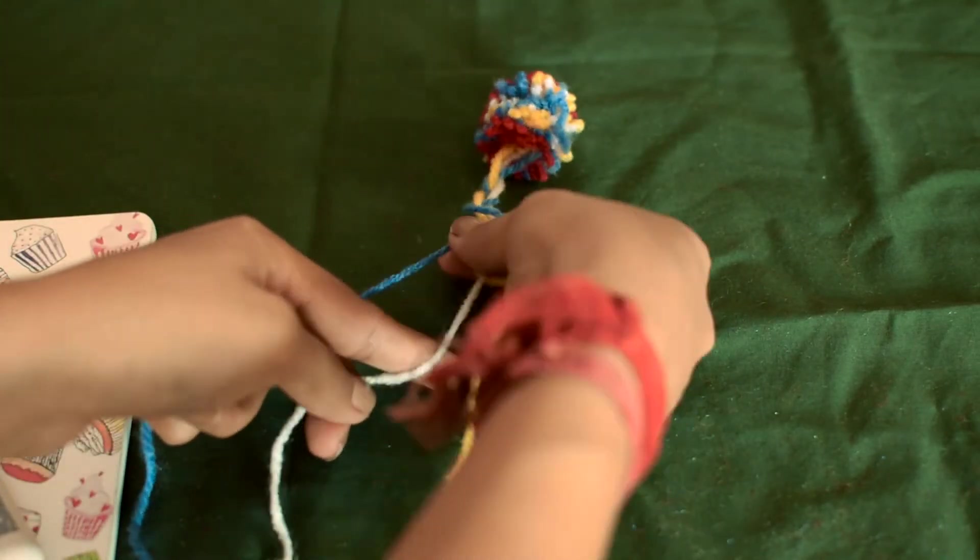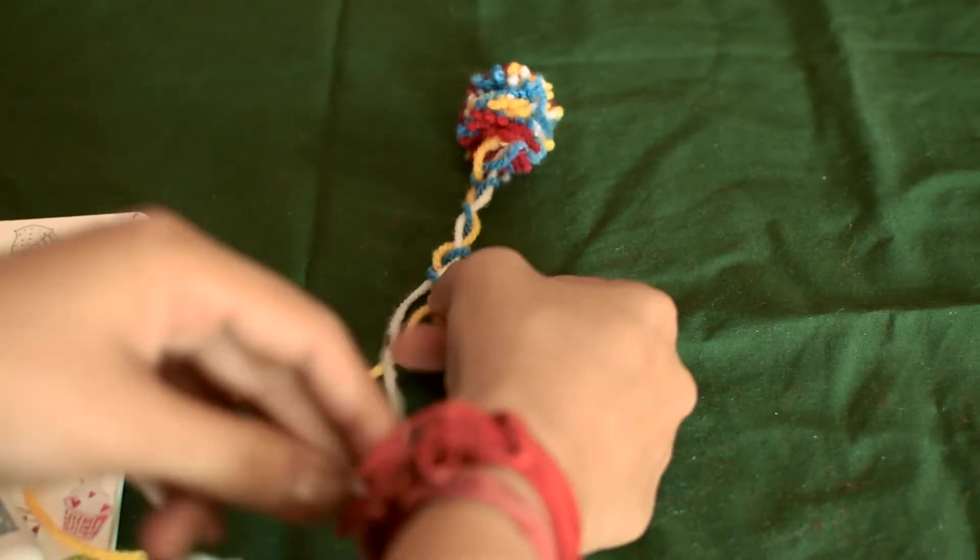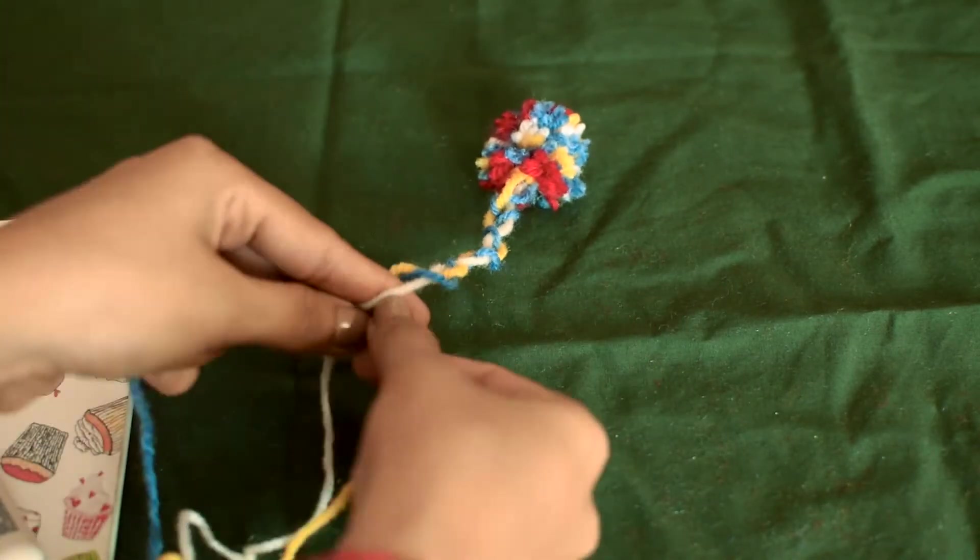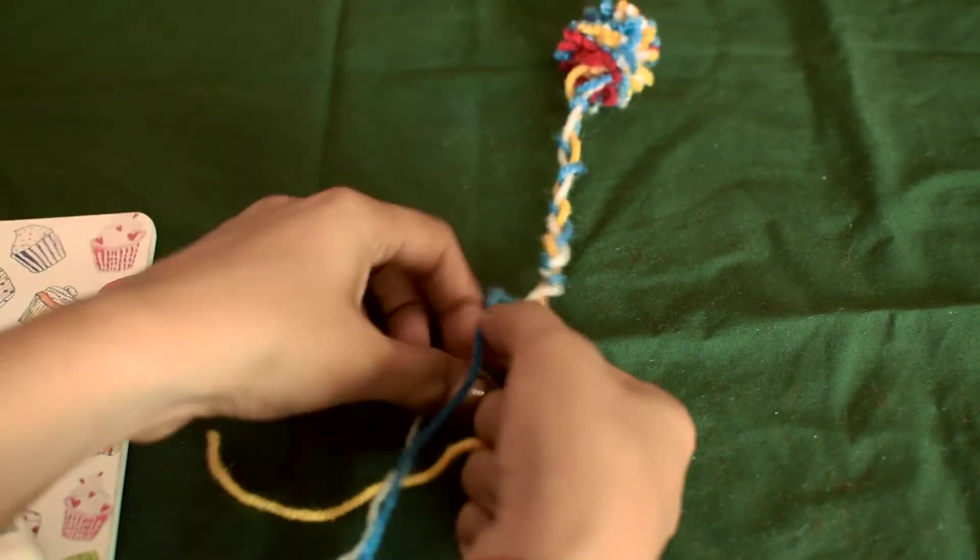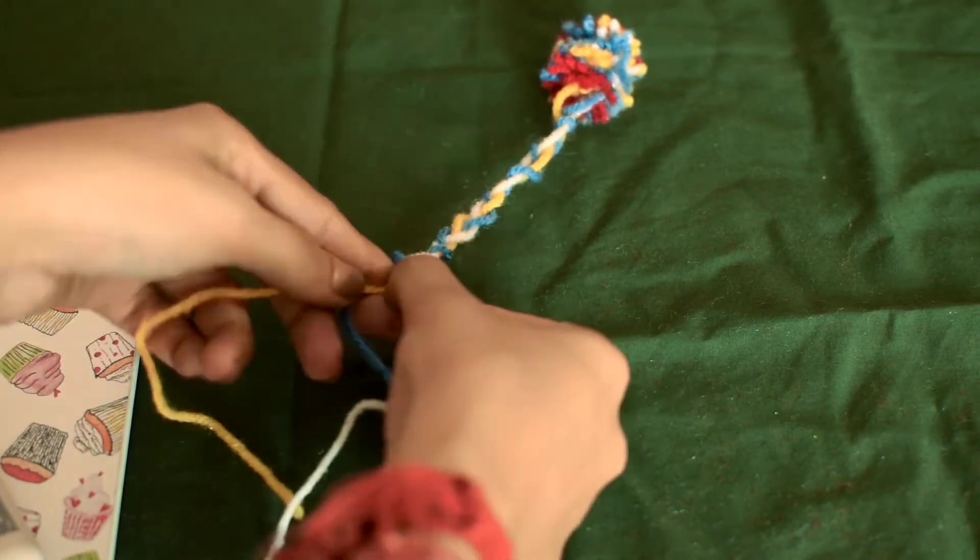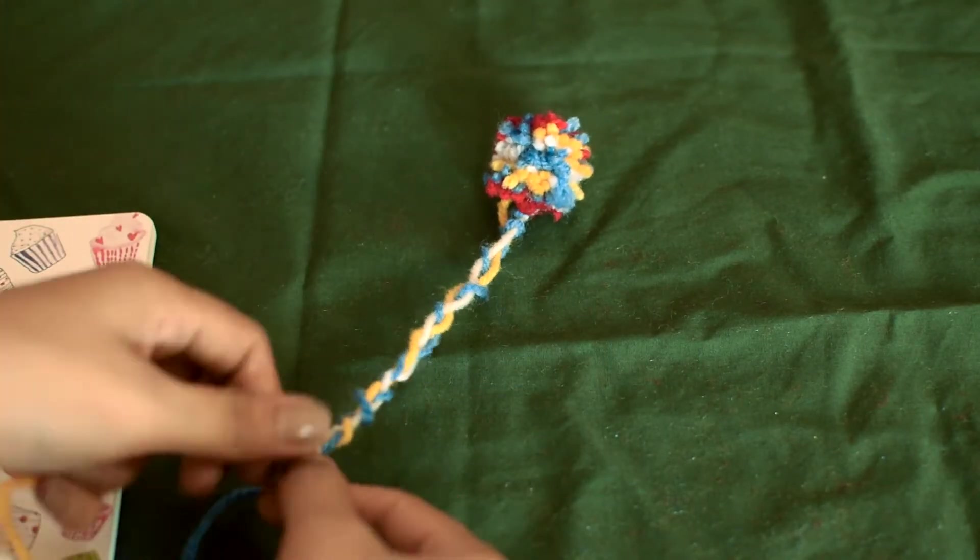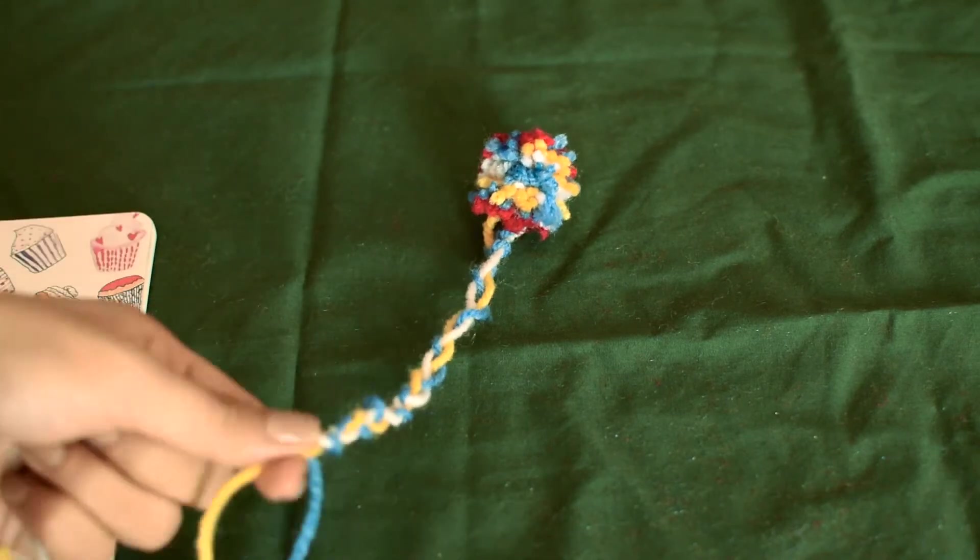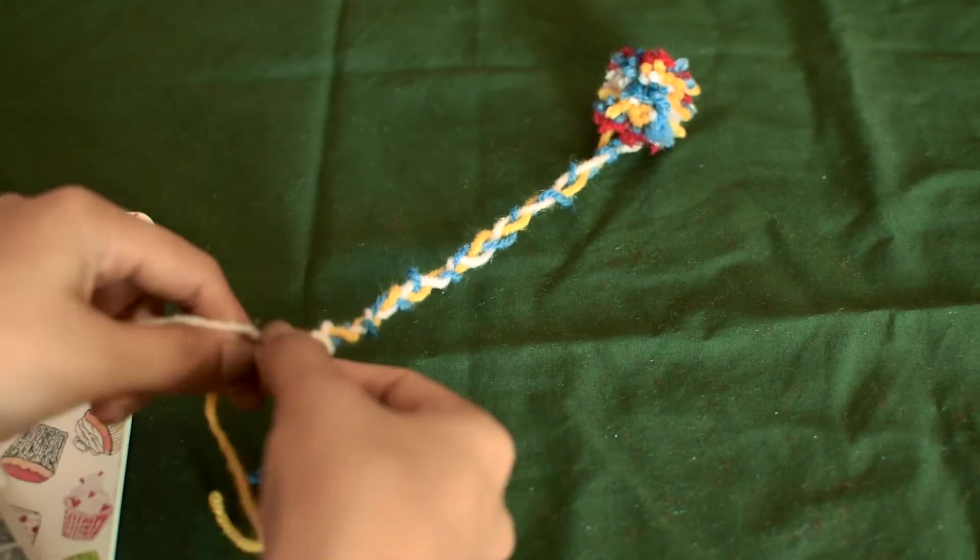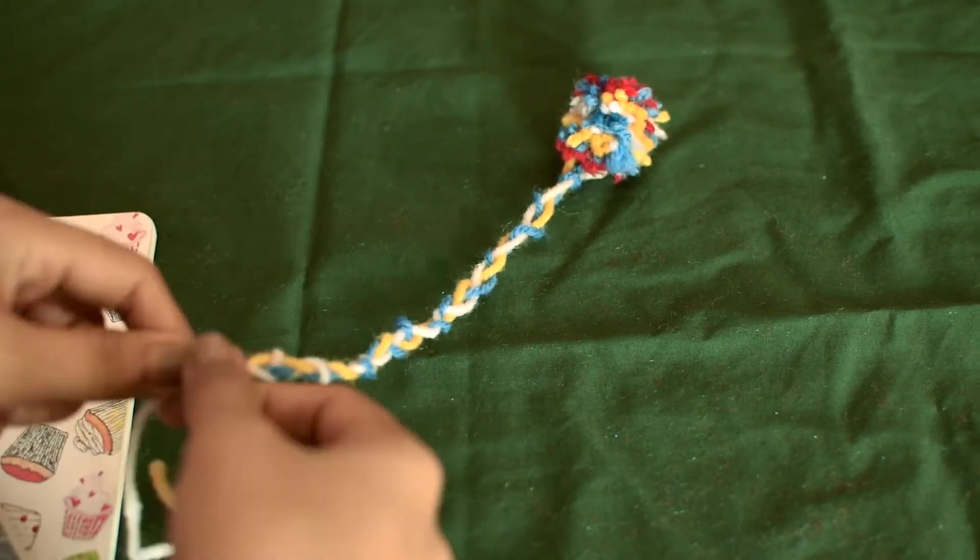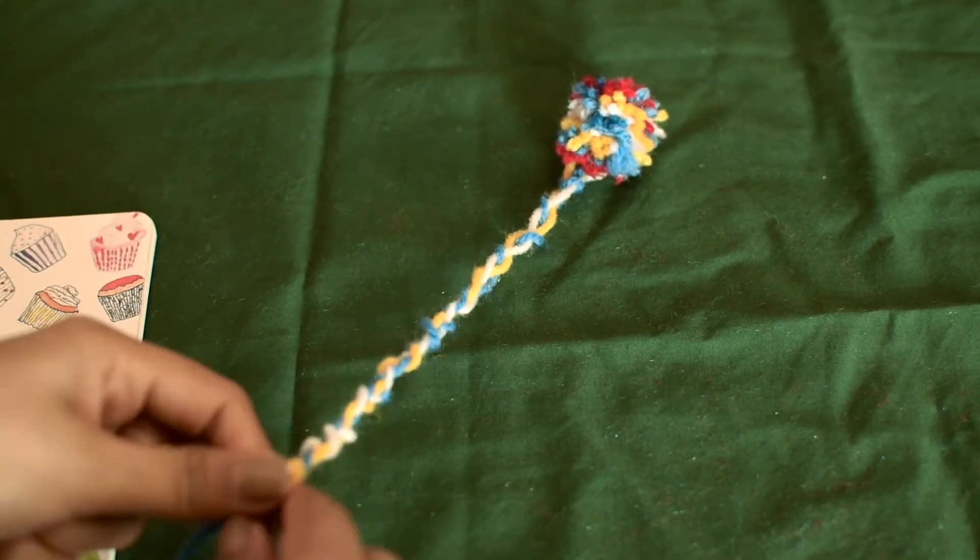You can definitely go for a fishtail braid or braid with more threads. Instead of three you can add six or nine. The more complicated the braid, the prettier the bookmark will be. After you're done braiding, tie a knot at the end and trim off any unevenness. I'm almost done braiding.